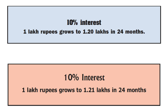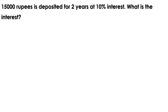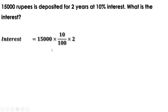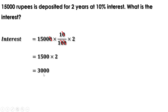There are different ways of computing interest. Let us recall the method learned in seventh standard. 15,000 rupees is deposited for 2 years at 10% interest. The amount deposited is 15,000, time period is 2 years, and rate of interest is 10% or 10 by 100. Multiplying all these together, we get interest: 15,000 into 10 by 100 into 2. Cancelling zeros, we get 1,500 into 2, which equals 3,000 rupees.